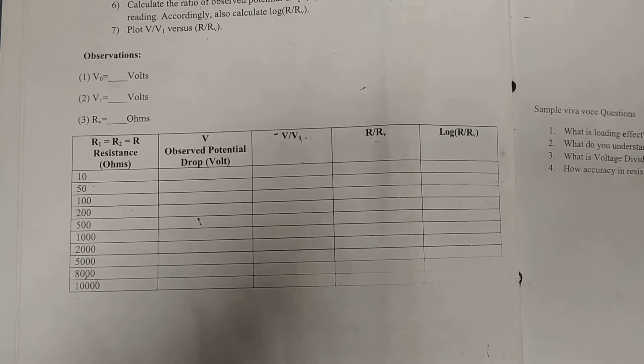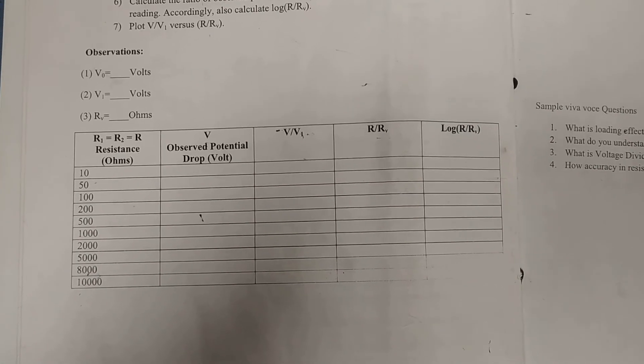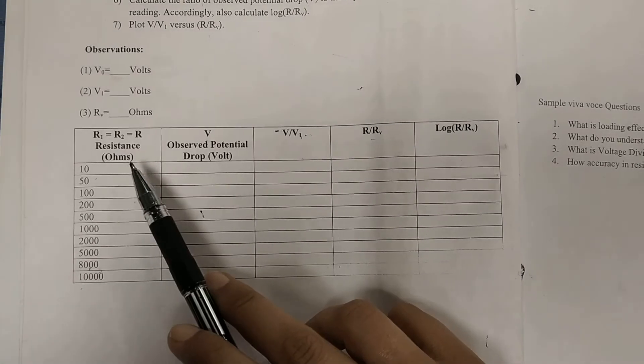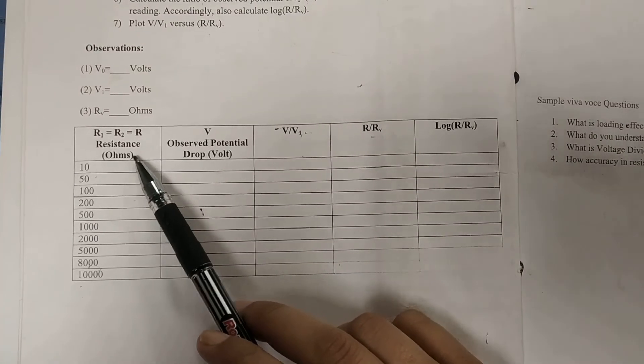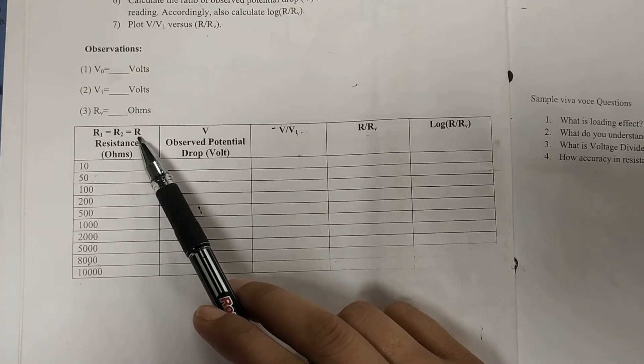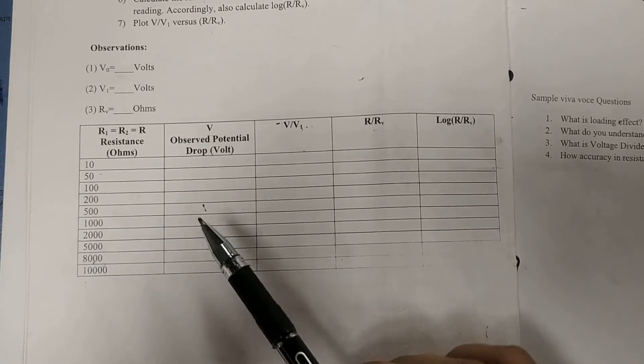Now, for calculation part, let's look on the observation table. Here, we have this value of resistance that R1 and R2 that is equal to R because both R1 and R2 are equal.